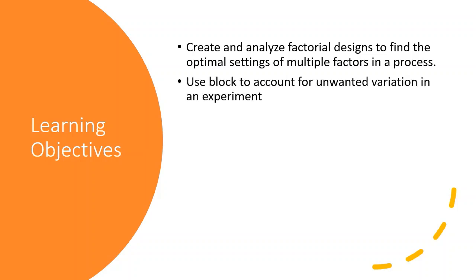We use block to account for unwanted variation in an experiment. Blocking is a design strategy that helps you account for unwanted variation in the process. In other words, it allows you to block out the effect of a nuisance factor. You will learn how to incorporate and analyze blocks in a factorial experiment.